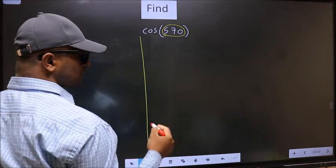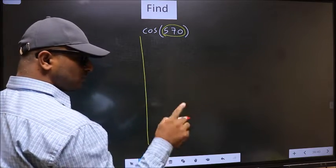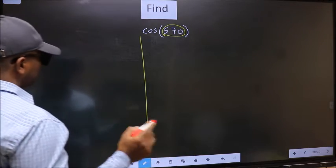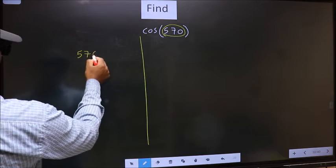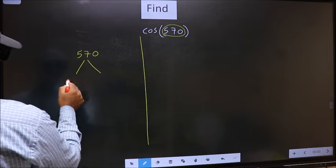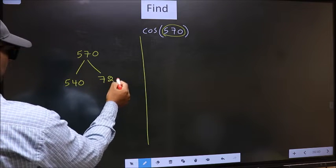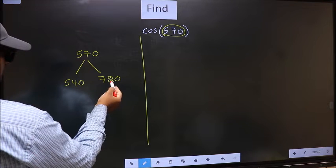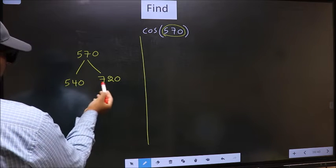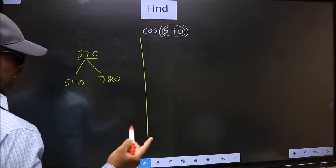Now you should check 570 lies between which two multiples of 180. What I mean is, 570 lies between 540 and 720. This is 180 into 3, and this is 180 into 4. Between these two numbers, 570 lies.